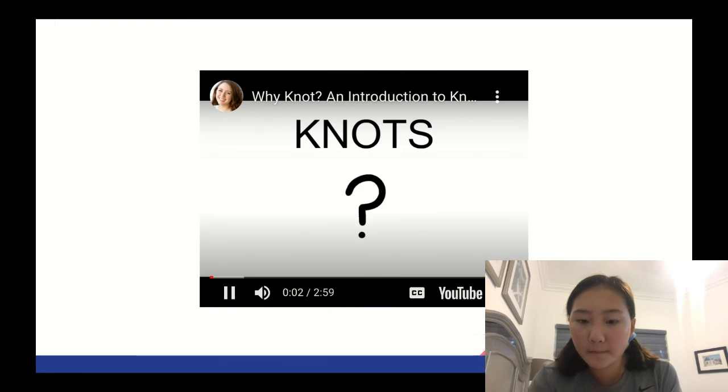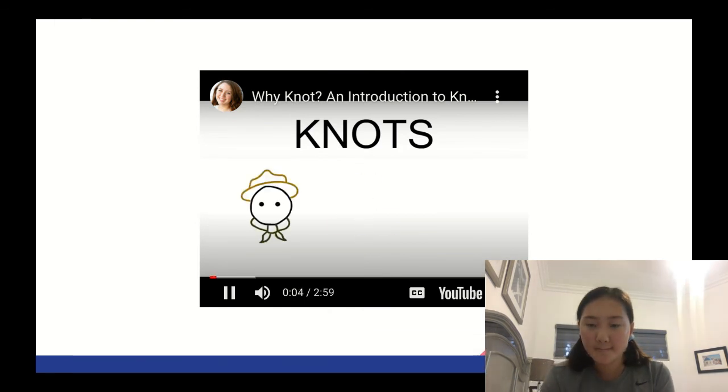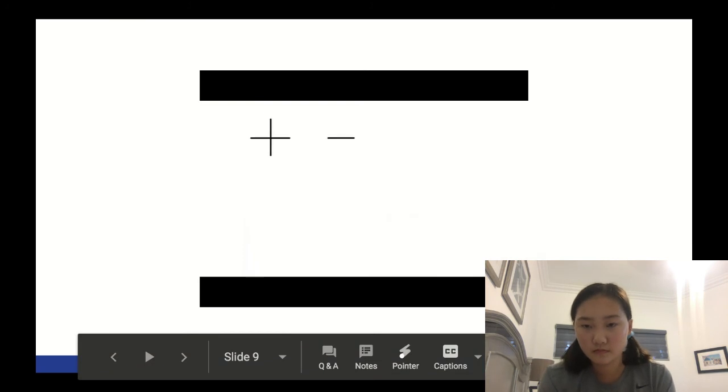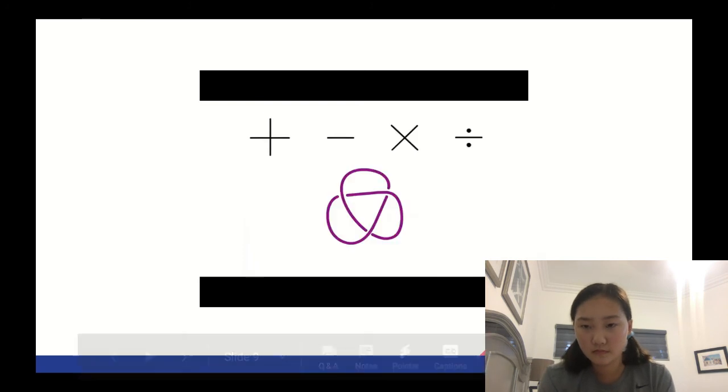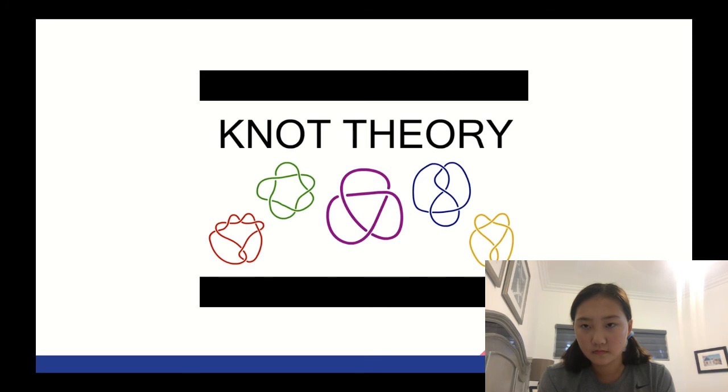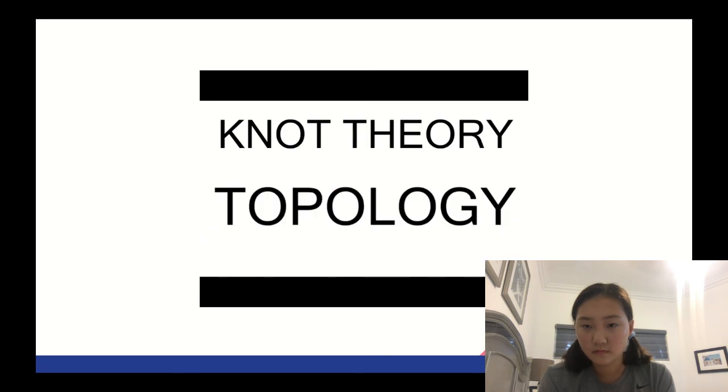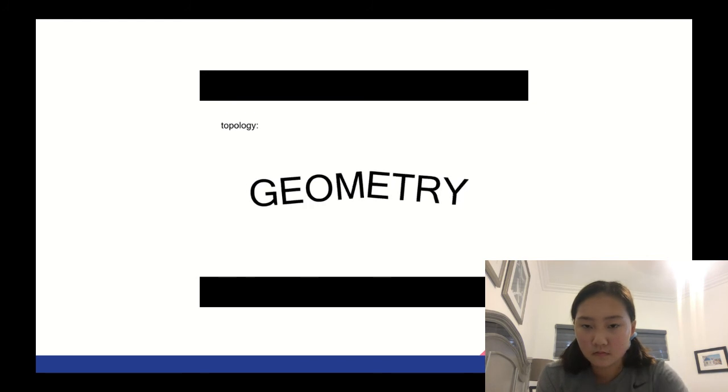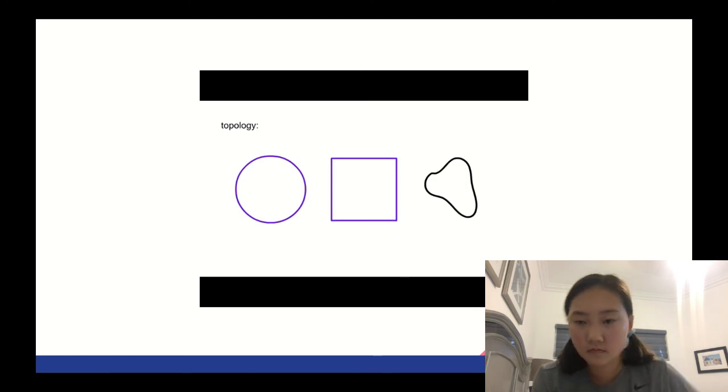When I say knots, what do you think? Boy Scouts? Sailing? Shoelaces? Well, there's also an entire subject in math devoted to knots. Knot theory. A part of the field of topology. Topology is like traditional Euclidean geometry, but with the rules bent a little. In topology, this is a circle, but this is also a circle. And this is one, too. Objects can still be congruent after smooth deformations. Stretching, bending, and twisting. What you can't do is break or glue.